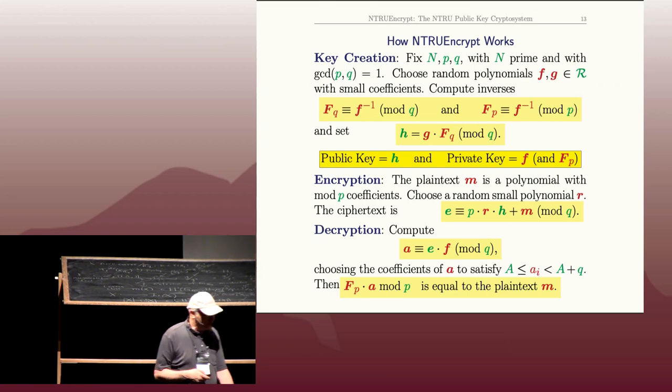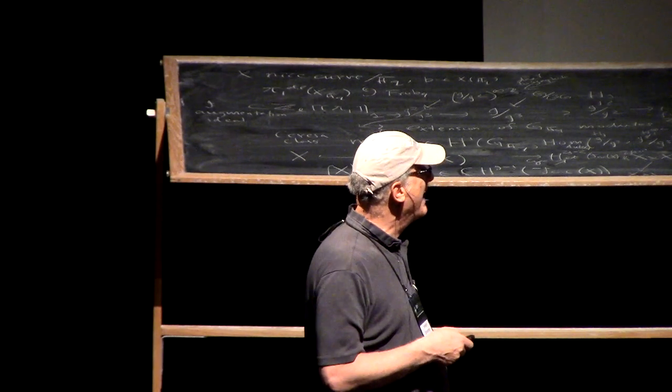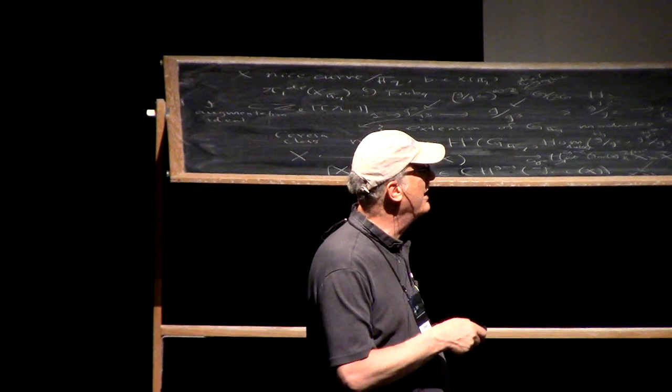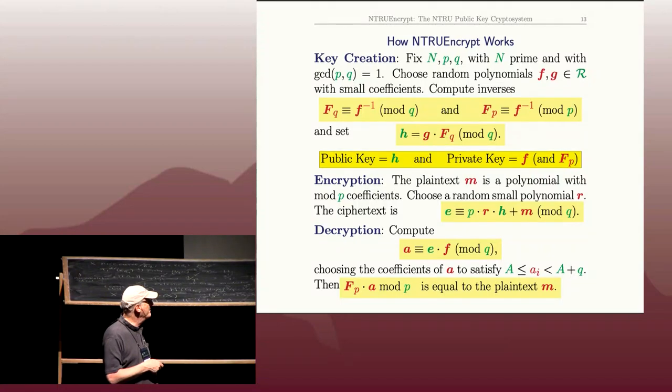How does decryption work? The first thing Alice does is she takes Bob's ciphertext, his E, and she multiplies it by her private small f, and she reduces the coefficients mod q.